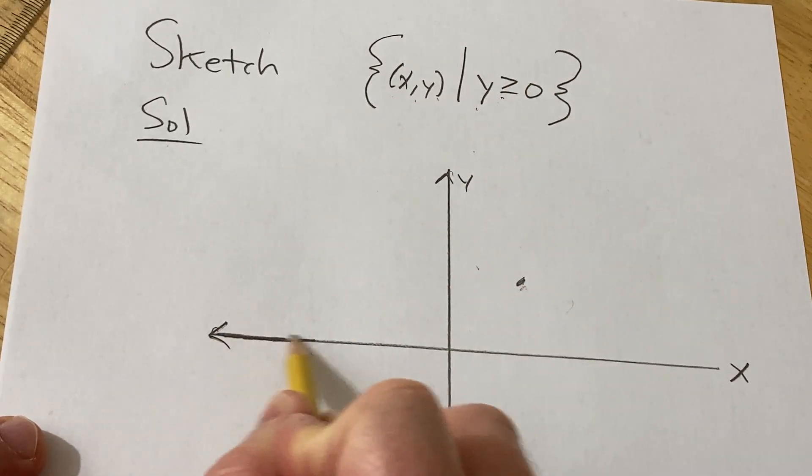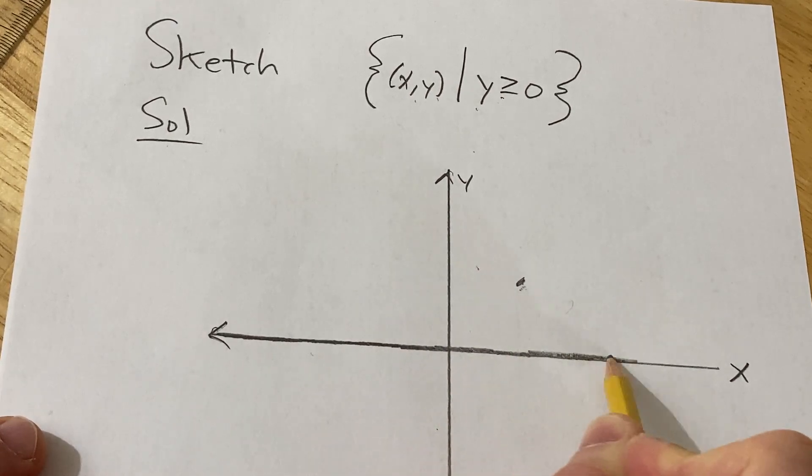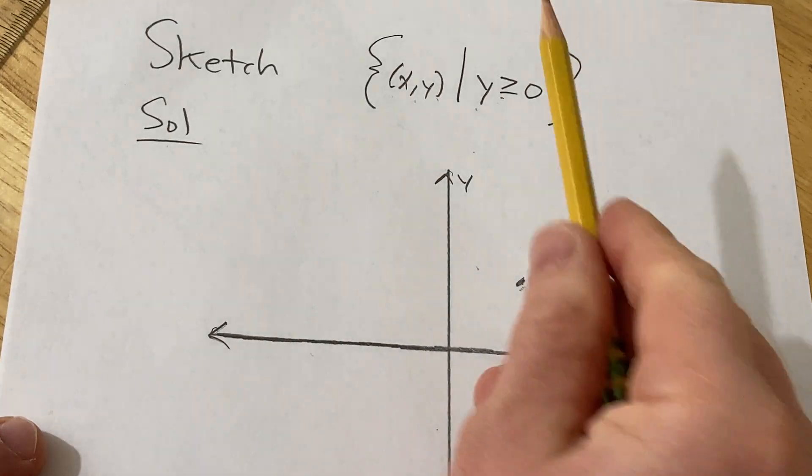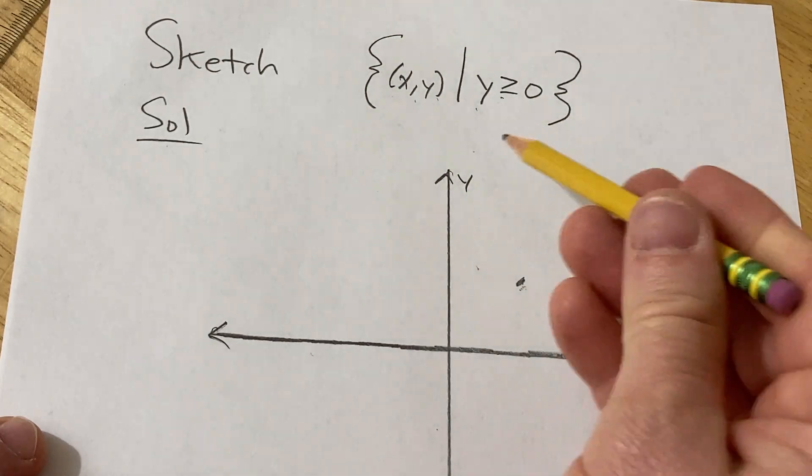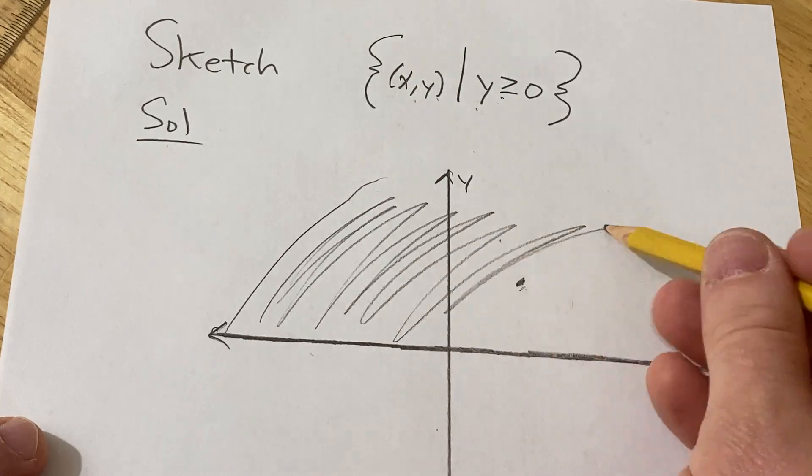So you include the x axis because every single point on the x axis is such that y is equal to zero. So every single point on the x axis is in this set. And then you include all the points up here as well.